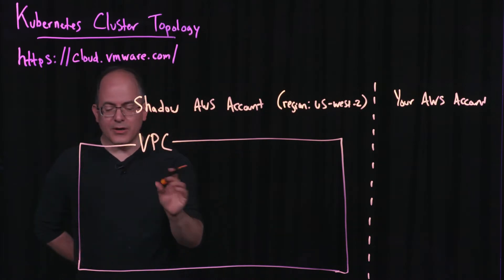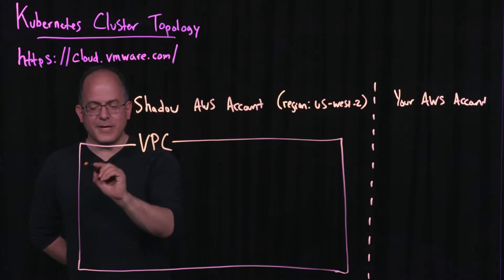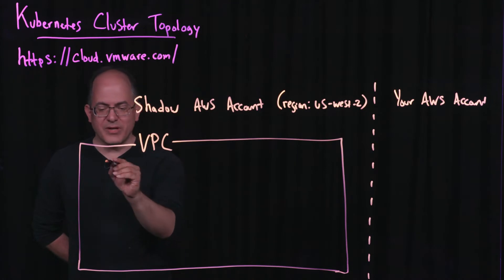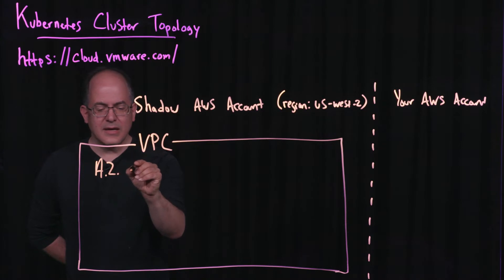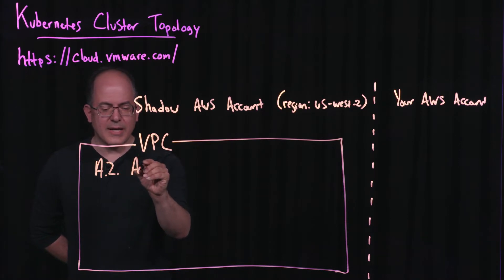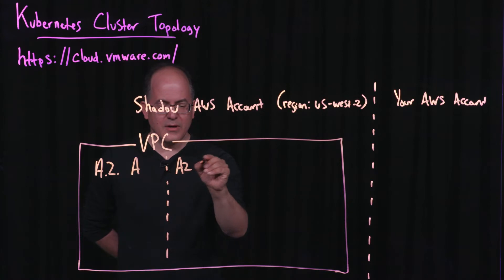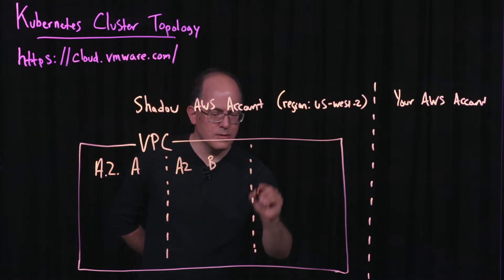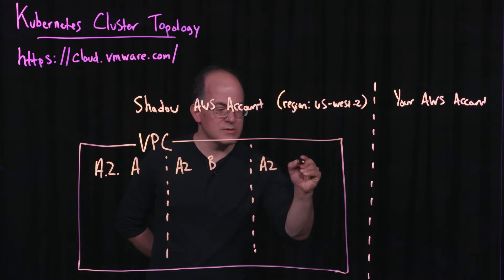We are going to create the Kubernetes cluster in three availability zones for maximum availability. I'm going to assume we have three zones — I'll abbreviate it AZ: availability zone A, availability zone B, and availability zone C.